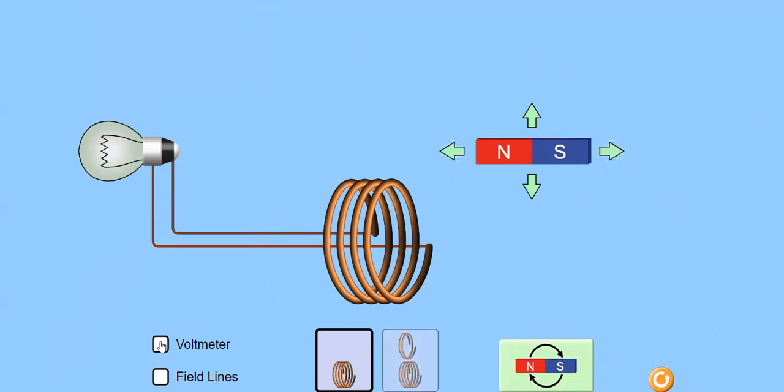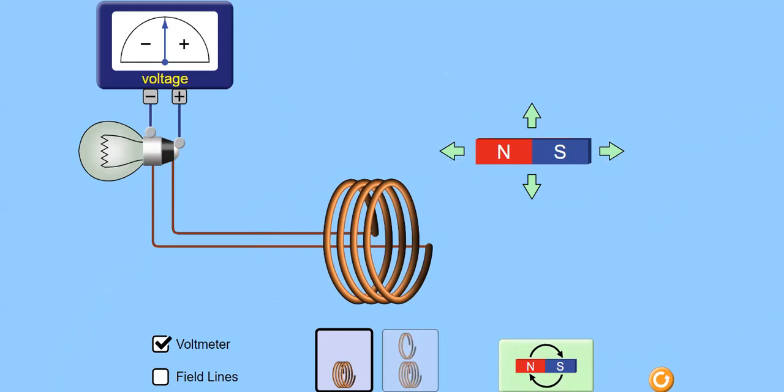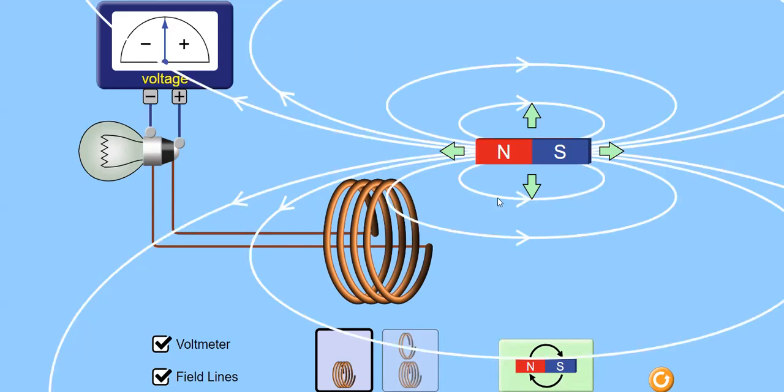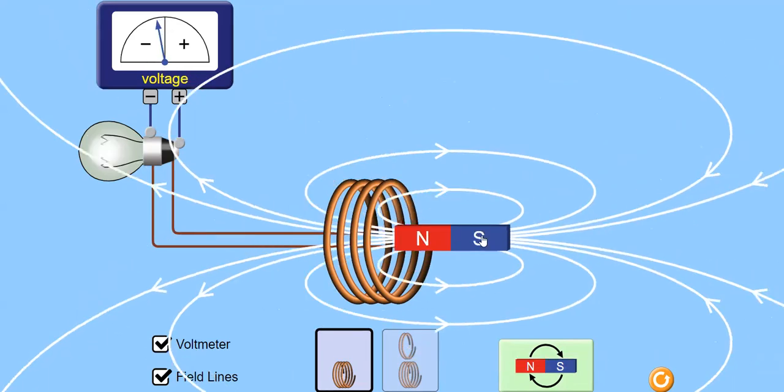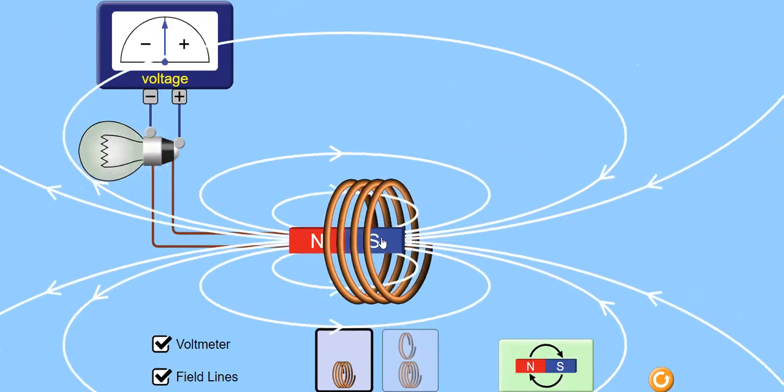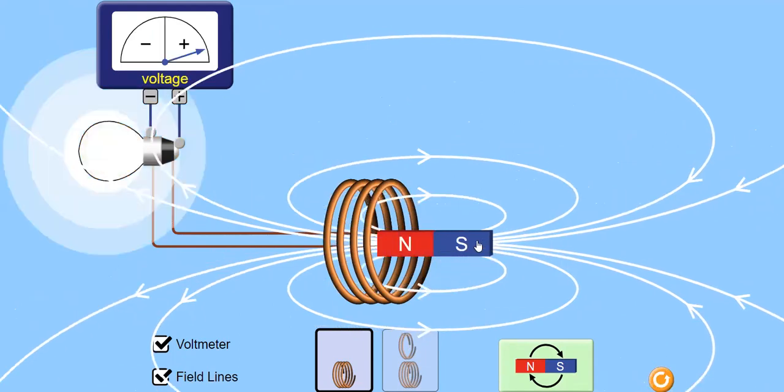Again, the voltmeter is connected. Field lines. I will move and see how electricity is produced.